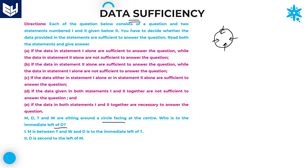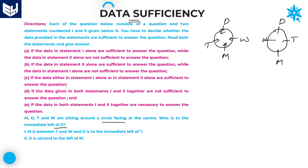Now the first statement given is: M is between T and W. We have another possibility — M is here, T is here, W is here. Automatically, one more person D is at this point in both the cases.